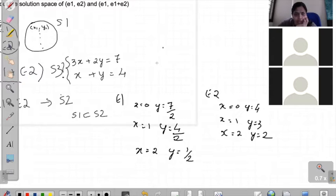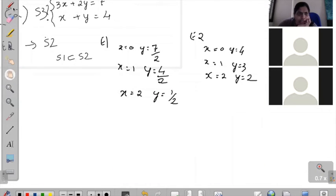Now, for the solution space for e1 plus e2, it is, for x is equal to 0, the y value is, I don't know, surprisingly. See, in 7 by 2, the numerator is 7, right? The numerator of y is equal to 7 by 2, the numerator is 7, and in equation 2, the numerator is 4. If you add both the numerators, 7 plus 4 is 11, divided by, and denominator for e1 is 2.